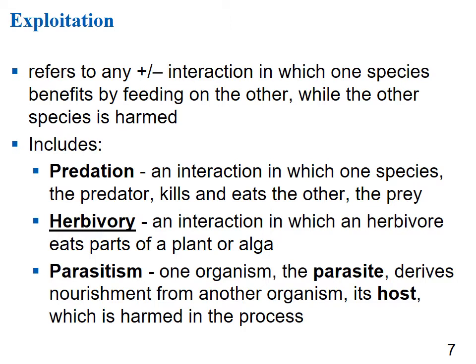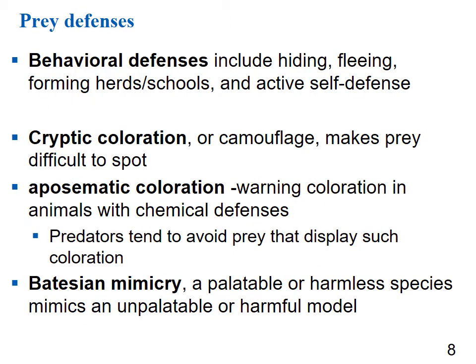Exploitation is a positive-negative interaction where one species benefits by feeding on the other, which is harmed. This includes predation, herbivory, and parasitism. Prey organisms try to defend themselves: they can use behavioral defenses like hiding, fleeing, forming a herd, or active self-defense. They also have cryptic coloration — camouflage — that makes them difficult to spot, and aposematic coloration, which is warning coloration telling predators to stay away.